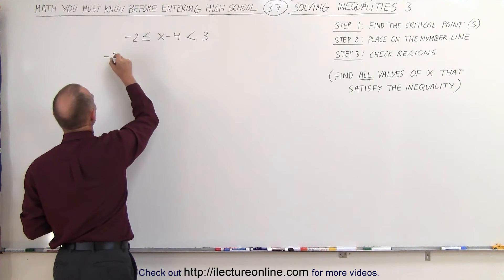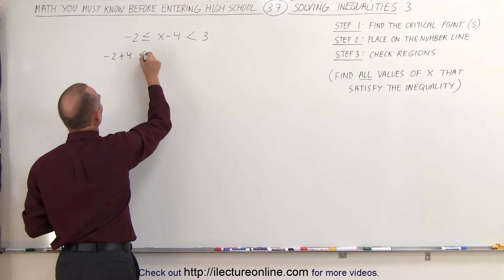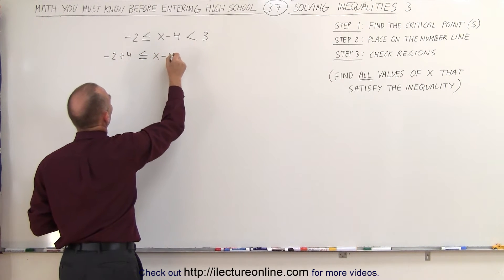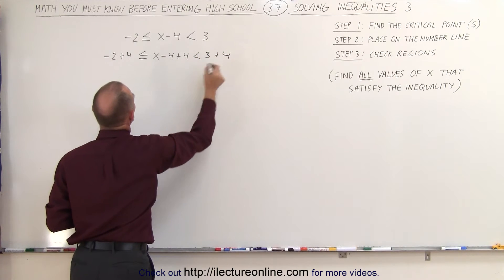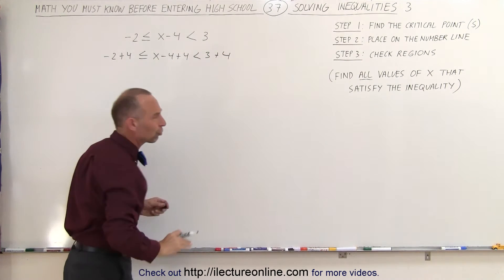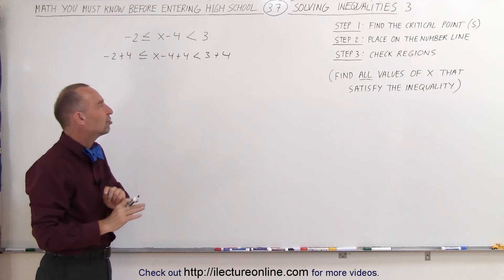We get minus 2 plus 4 less than or equal to x minus 4 plus 4 less than 3 plus 4. Notice we added a 4 to every portion of the inequality, so we didn't really change anything.